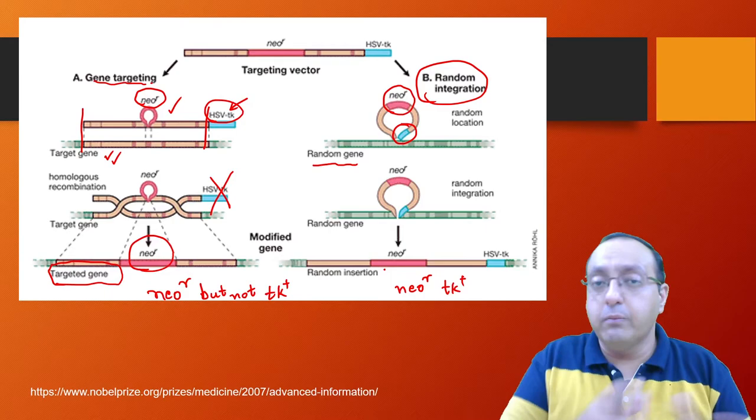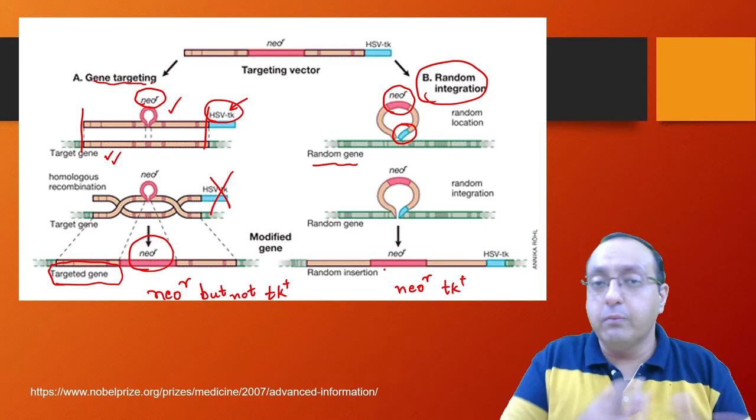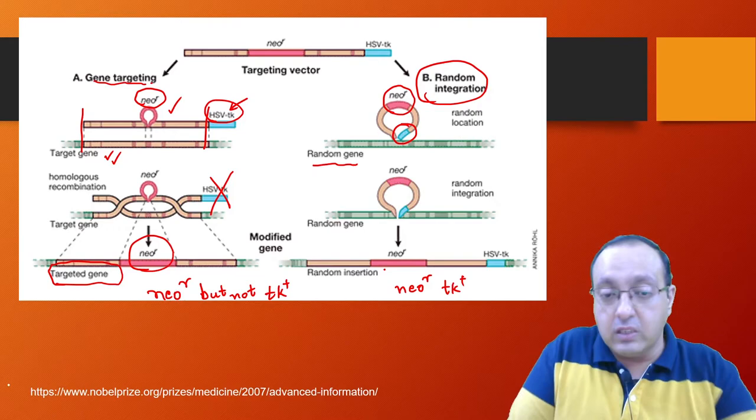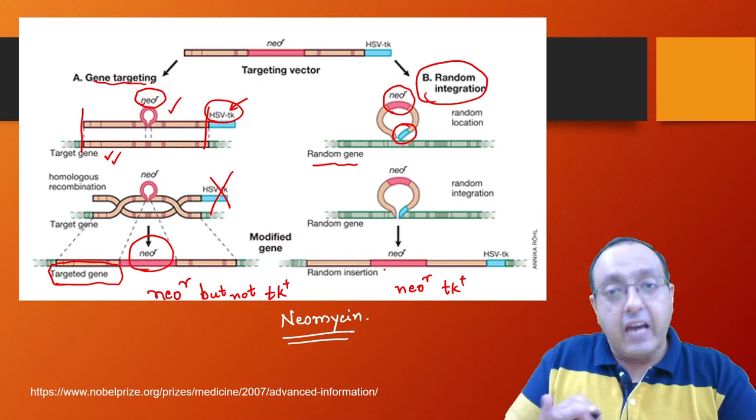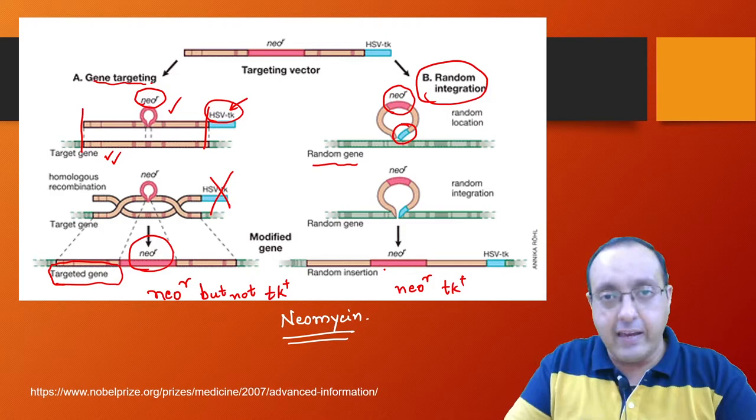Now here is where we select using positive and negative selection. So this is called positive-negative selection. So let's see how it works. In the medium we use neomycin. So only the cells which can grow in the presence of neomycin will grow. So non-transgenic cells will definitely die off. So both of these cells will survive this.